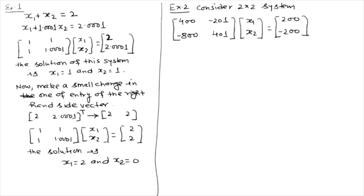In example 1 we made a small change in an entry of the right hand side vector. Now let us make a small change in one of the entries from the coefficient matrix. This is the 2 by 2 system, and the solution is given as x1 equals to minus 100 and x2 equals to minus 200.